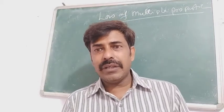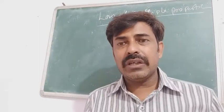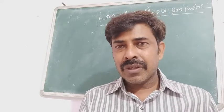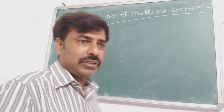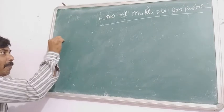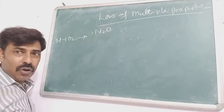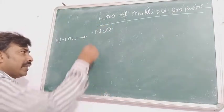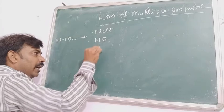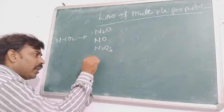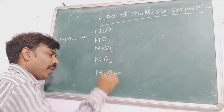Taking an example: nitrogen is an element which forms more than a single compound with oxygen. When nitrogen combines with oxygen, it forms the first compound called nitrous oxide N₂O. The second compound is nitric oxide NO. The third one is N₂O₃ nitrogen trioxide, the next one is NO₂ nitrogen dioxide, and the last one is N₂O₅ nitrogen pentoxide.